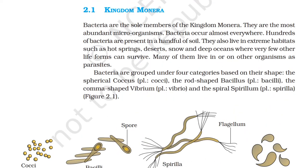2.1 Kingdom Monera. Bacteria are the sole members of Kingdom Monera and are the most abundant microorganisms. Bacteria occur almost everywhere — hundreds are present in a handful of soil. They also live in extreme habitats such as hot springs, deserts, snow, and deep oceans where very few other life forms can survive. Many of them live in or on other organisms as parasites.